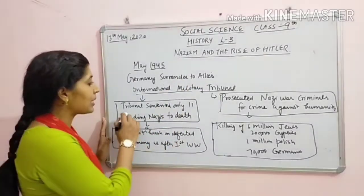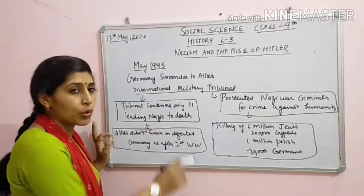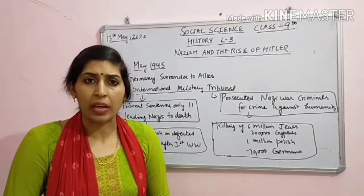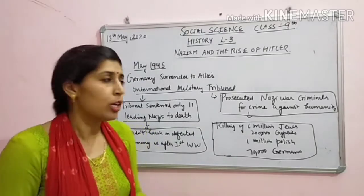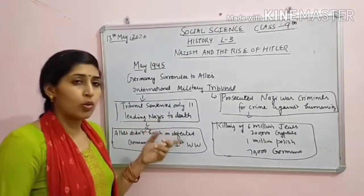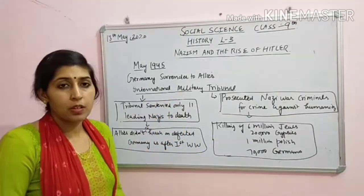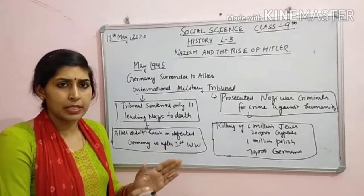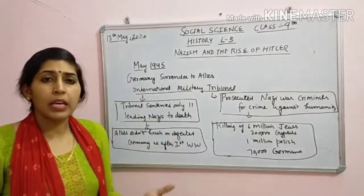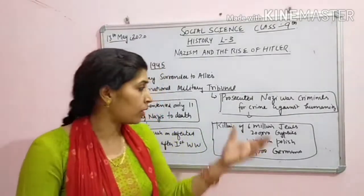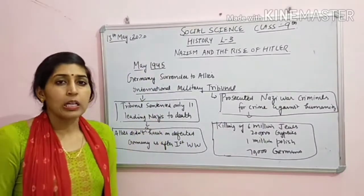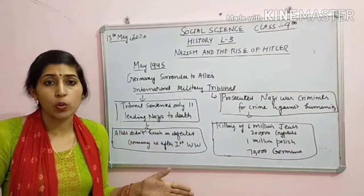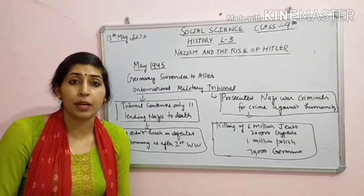Tribunal sentenced only 11 leading Nazis to death. Ab Nazi jo follower the Hitler ke, woh bohut saare log the jinhone begunaah logon ko maara tha. Lekin unke jo top 11 leaders the, sirf unhi ko death ki saza sunaayi gaya - military tribunal ne sirf 11 top leaders, unhi ko faansi ki saza sunaayi. Ab aap sochenge ki itne saare agar log the to sabhi ko maarna chahiye tha. Lekin unhone kaha ki hum itna harsh, itna kathor nahi hona chahte the Germany ke saath jitna ki First World War ke baad hue the.